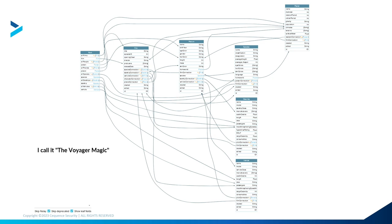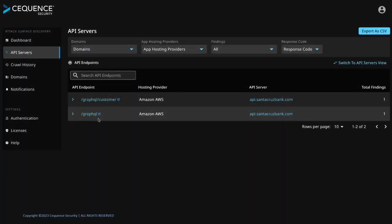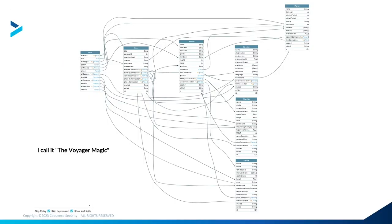Normally, introspection queries are disabled on a public-facing server — they should not be allowed, so attackers have no idea what is going on at the backend. But since it was enabled, I was able to find out the exact path to call customers' addresses and PII details.